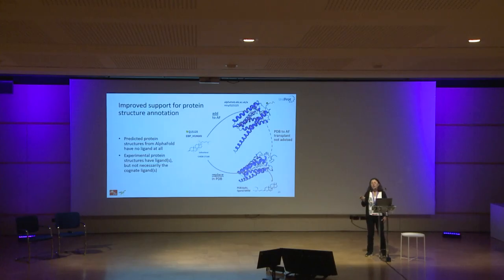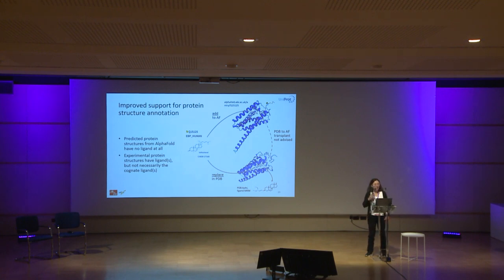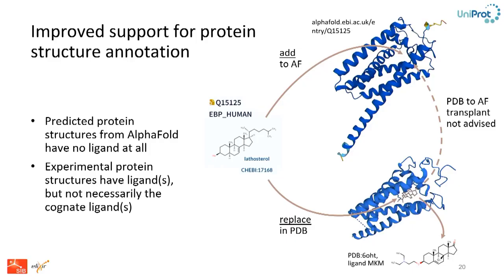This query applies for searching ligands in binding sites, and by changing the prefix you can do the same to retrieve ligands in cofactor annotations, in RheA reactions, or just in UniProt entries if you don't specify any field. Having ligand data annotated with ChEBI in UniProt allows many new applications — for instance, it provides improved support for structural biologists and for protein structure annotation.